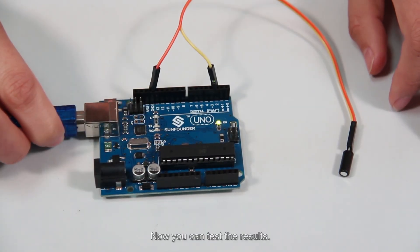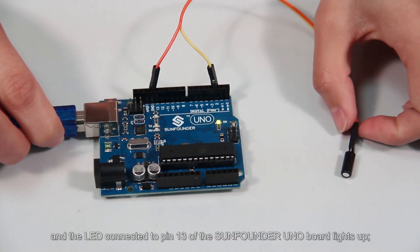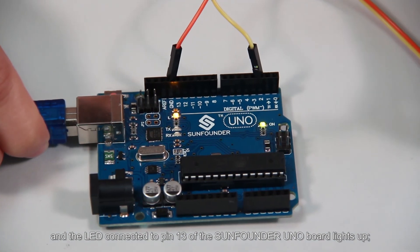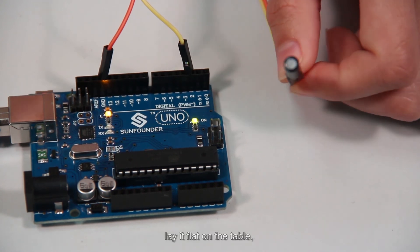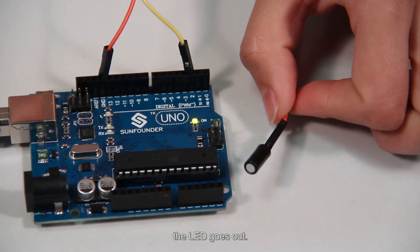Now you can test the results. Tilt the switch and the LED connected to pin 13 of the SunFounder UNO board lights up. Lay it flat on the table, the LED goes out.